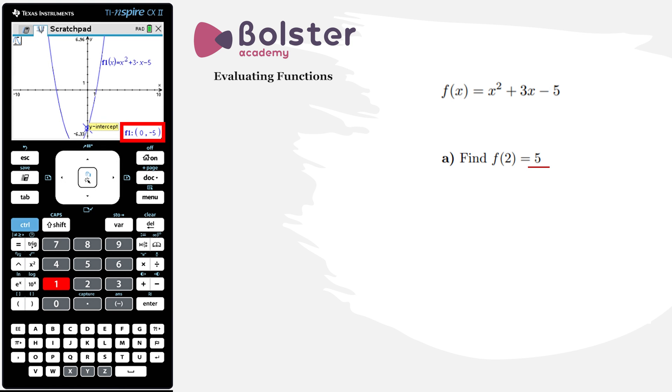Now we're not interested in the y-intercept. We want f(2), so we want the value of the function when x equals 2. So I just hit 2 on the calculator, hit enter, and there's the point on the graph where x is 2. x is 2 and y is 5, the point (2, 5).